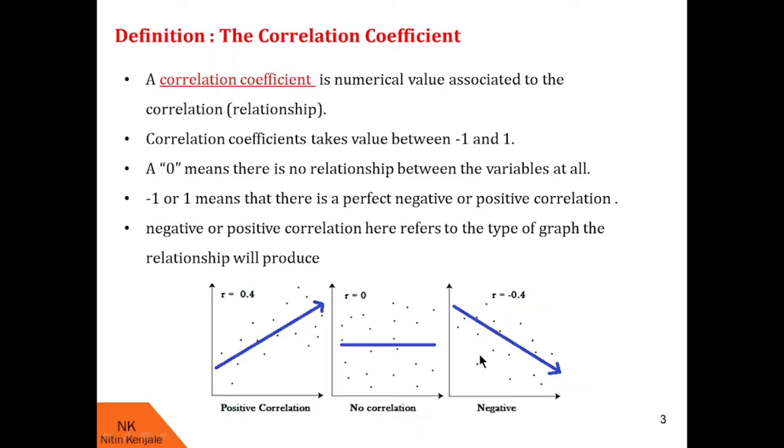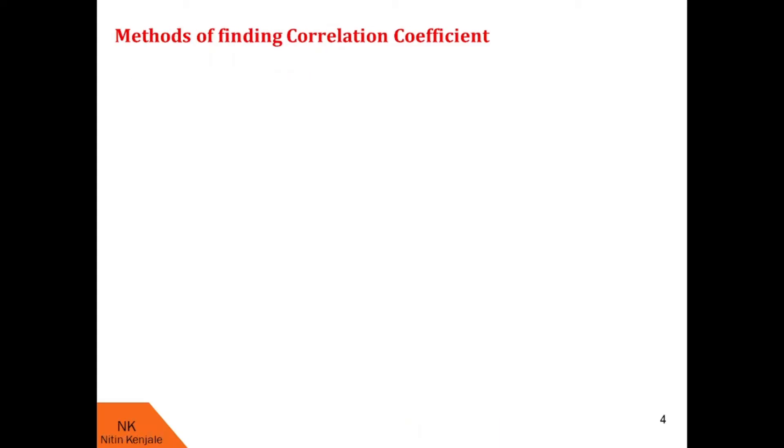I hope you understood this concept of coefficient of correlation. Next, I will list the methods of finding coefficient of correlation. First one is Karl Pearson's coefficient of correlation method. And second one is Spearman's rank correlation coefficient method. We are going to see these methods in detail in my next video. Next we will see formulas of each of these two methods.